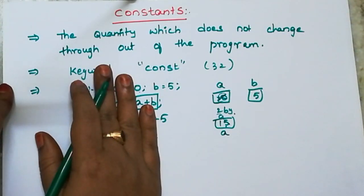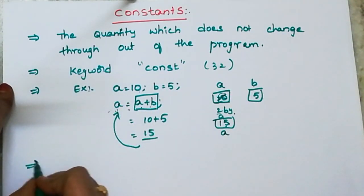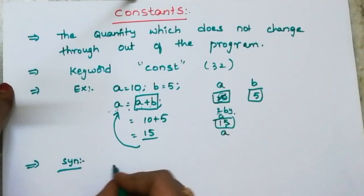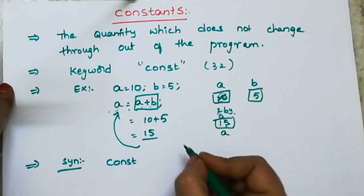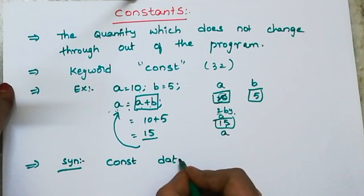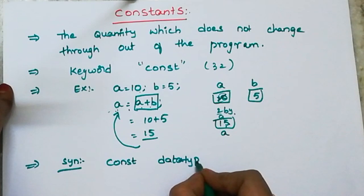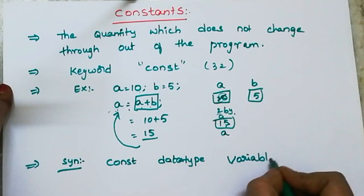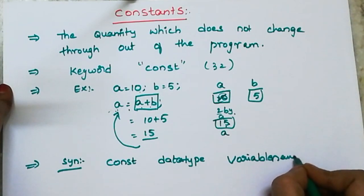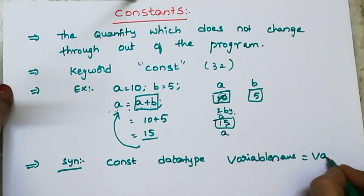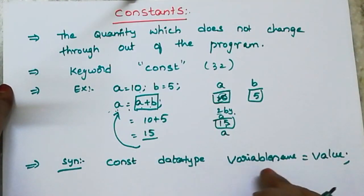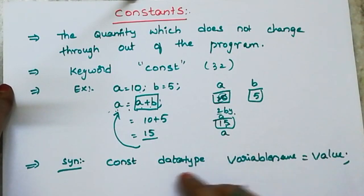So how do we declare a constant? The syntax is: const keyword, then data type, then variable name, equals value. The 'const' keyword is used to represent a constant. So the full syntax is: const, data type, variable name, equals value.